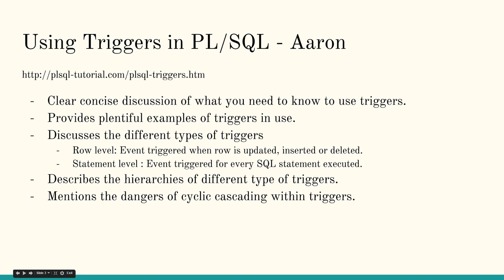The website then discusses the two types of triggers available — row level triggers and statement level triggers — as well as outlining the hierarchy of trigger execution in PL/SQL. More examples are provided to better illustrate the effects of this hierarchy. The tutorial then teaches how to obtain information about the triggers you have created using the data dictionary. Lastly, an undesirable error that can occur with triggers is discussed, namely cyclic cascading or infinite loops.